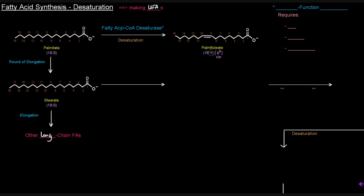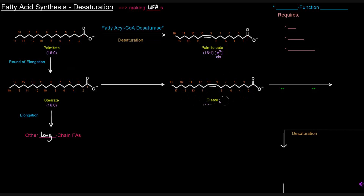Just like we do this with palmitate to get palmitoleate, we can also do it to stearate to get oleate — same idea. We get that double bond put in between carbons 9 and 10. The convention and the process are the same: desaturation done by fatty acyl-CoA desaturase.